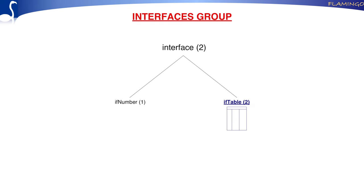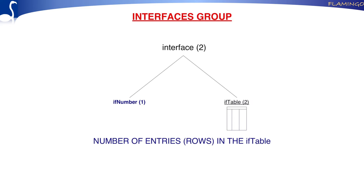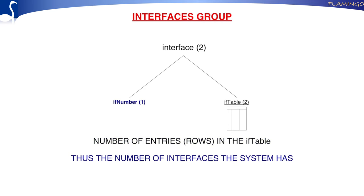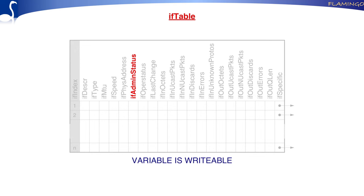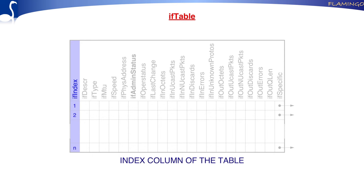Let's look at the interfaces group. It is structured quite simply — it has a table and an interface number variable. The interface number variable indicates the number of entries in the table, i.e., the number of interfaces you have. If your system has just an Ethernet card, you have one interface. The table is indexed via the IF index, which is just a unique number — it doesn't even have to be a continuous numbering scheme.